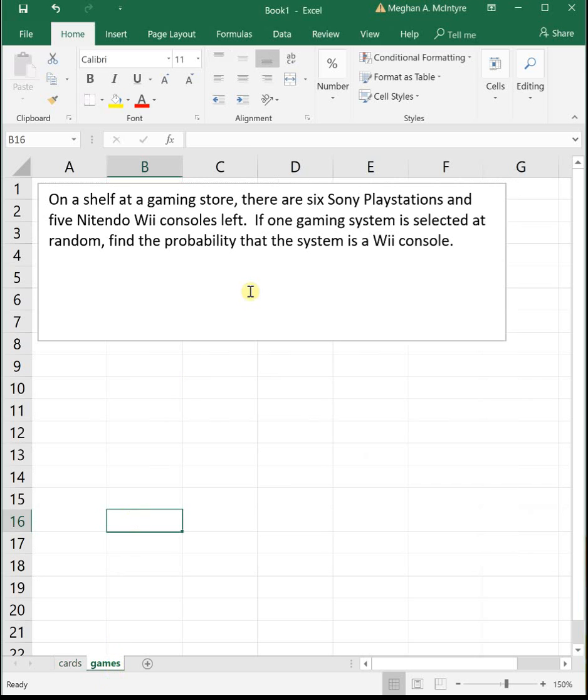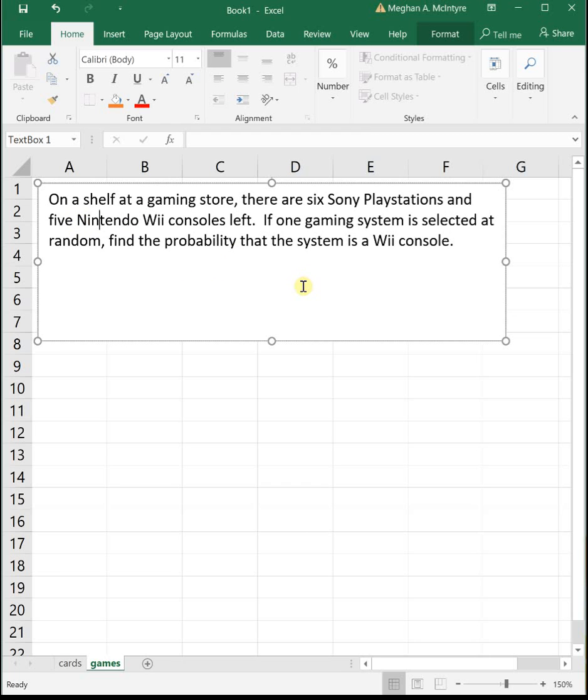Okay, next example. On a shelf in a gaming store, there are 6 Sony Playstations and 5 Nintendo Wii consoles left. If 1 gaming system is selected at random, find the probability that this system is a Wii console.